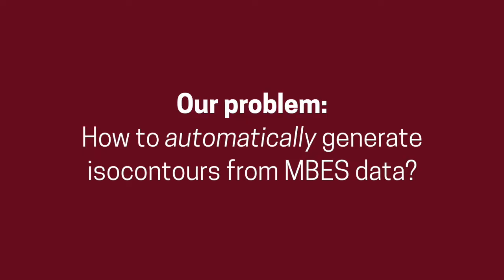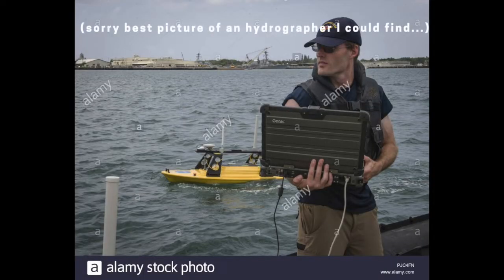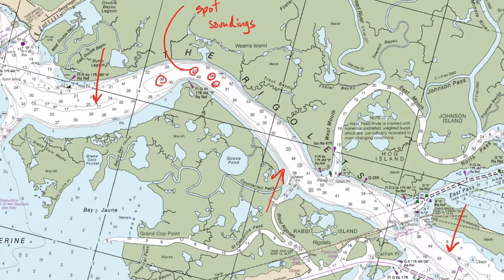The problem we're tackling in this lesson is how to automatically generate isocontours or depth contours from multi-beam echosounding data. First, notice in this ENC from Louisiana in the United States how the depth contours are smooth and sparse and therefore very readable. This is because they've been most likely drawn by hand by a skilled hydrographer. Indeed, even nowadays with terabytes of data and very powerful computers, the depth contours and the ENC in general are still very often drawn by hand.